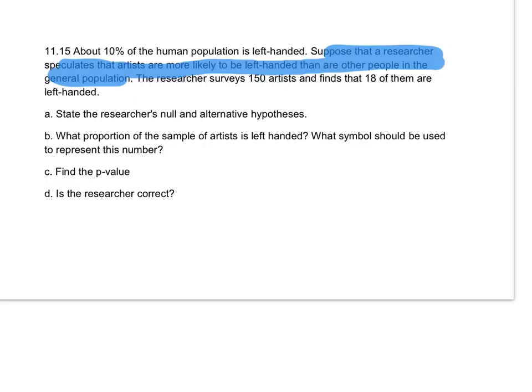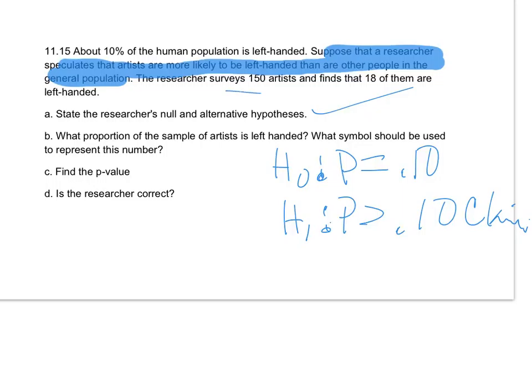Dr. Stevens has people write down, what's the claim? It says about 10% of the human population is left-handed. Suppose the researcher speculates that artists are more likely to be left-handed than other people in the general population. That's the claim. He thinks there's going to be more than 10% of artists will be left-handed.